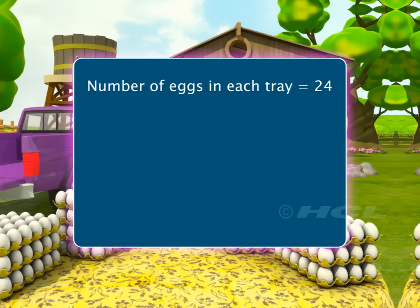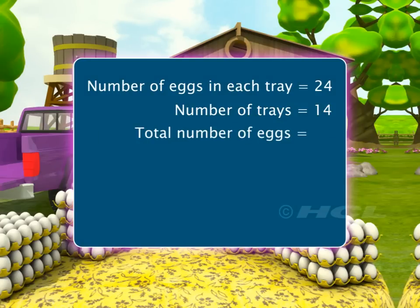Number of eggs in each tray is equal to 24. Number of trays is equal to 14. So, the total number of eggs is equal to 24 multiplied by 14.